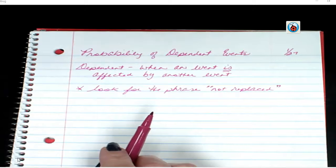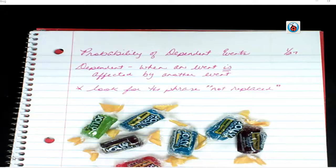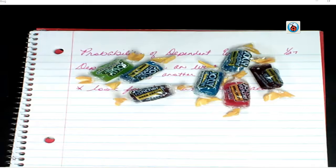So an example would be if I take these Jolly Ranchers and I'm going to make two selections. On my first pick I would like to get a blue and the second pick I would like to get a green.